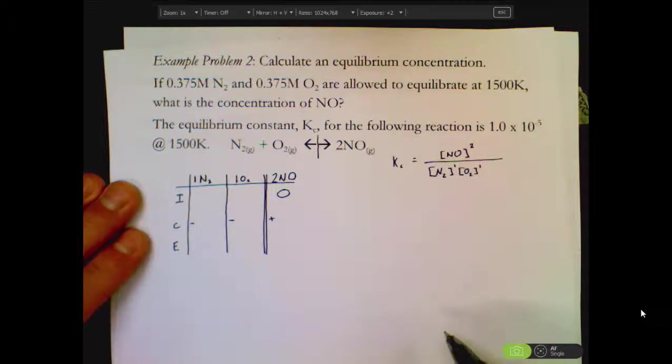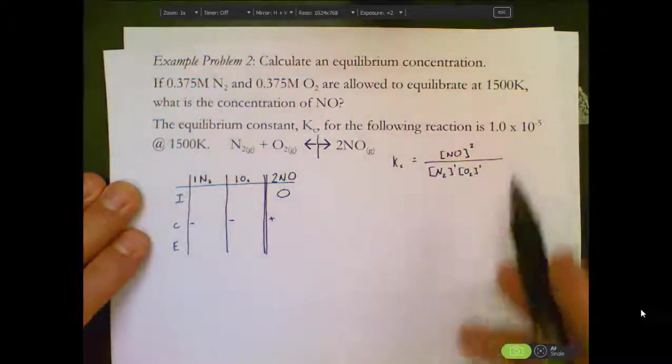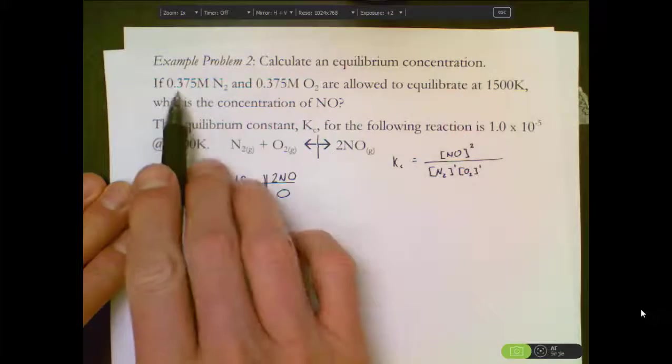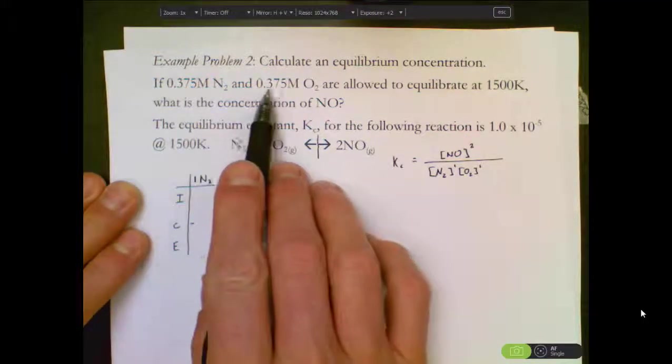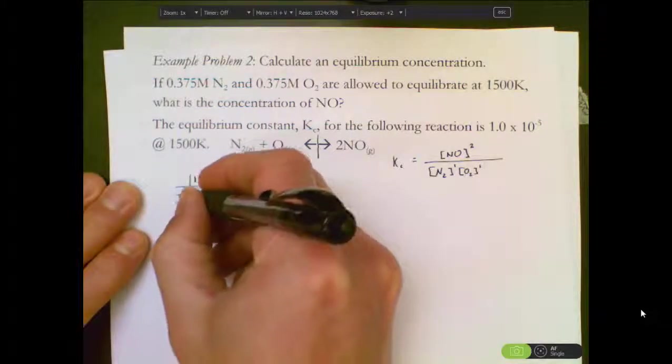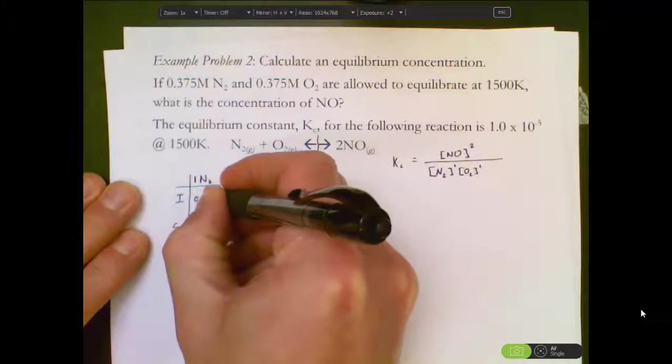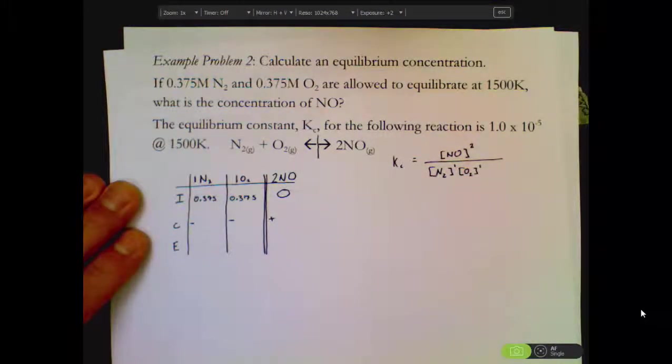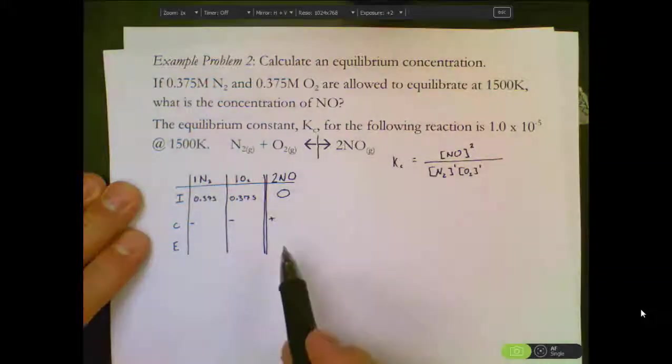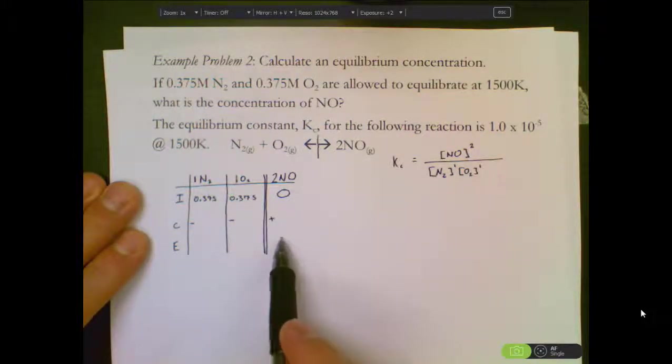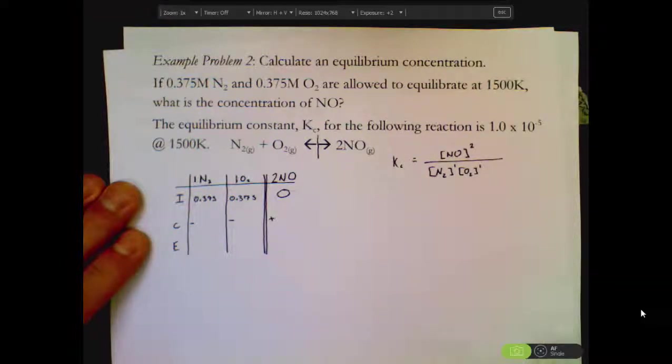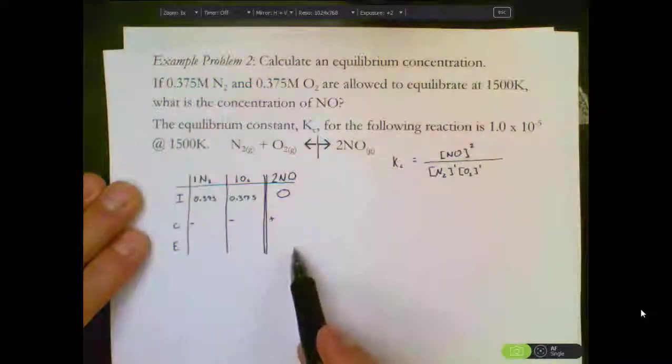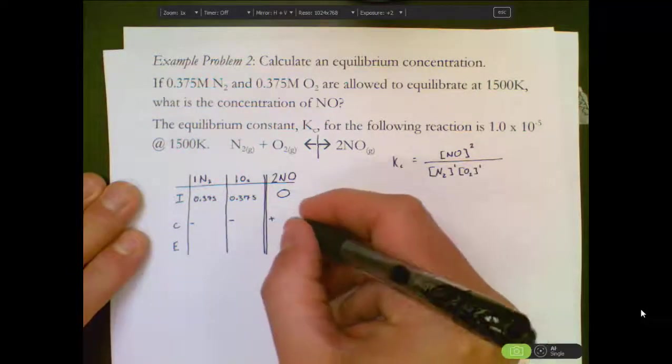We should be able to find some initial values in the text of the problem. If 0.375 molar nitrogen and 0.375 molar oxygen. So I can fill these as my initial values into my ICE table. They're allowed to equilibrate at 1500 Kelvin, which is the concentration of NO. So we want to know what this concentration happens to be. So that's going to end up increasing by some amount X. We don't know what that number is yet.